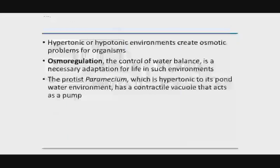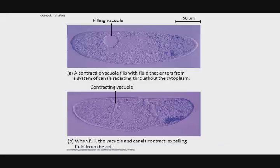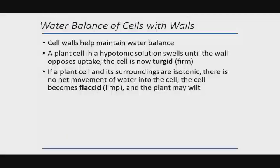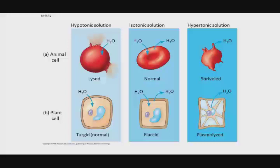Every organism has to have some means of osmoregulation to control the water balance between its cytoplasm and its environment. For example, a paramecium — a single-celled eukaryotic organism — has special organelles called contractile vacuoles that collect excess water and pump it out of the cell. For plant cells: turgid means the cell is firm and rigid because it's in a hypotonic solution; flaccid occurs in an isotonic solution; and plasmolyzed occurs in a hypertonic environment where water is drawn away from the cell, causing the plasma membrane to pull away from the cell wall.